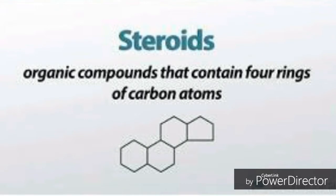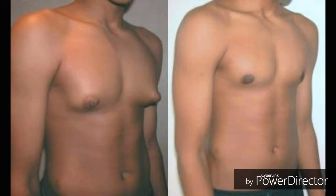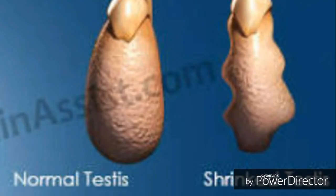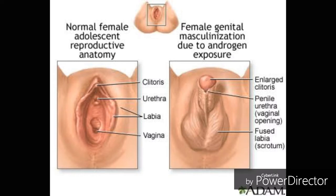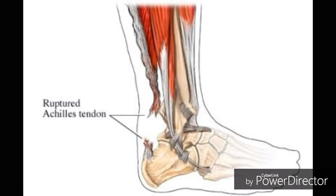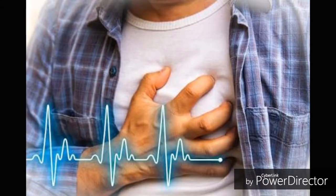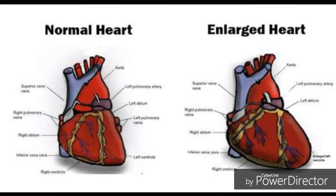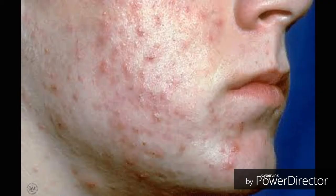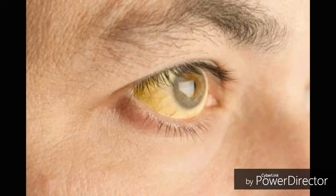Steroids: A steroid is an organic compound with four rings arranged in a specific molecular configuration. Effects of steroids on the human body include problems in the hormonal system. In men: infertility, breast development, and shrinking of the testicles. In women: enlargement of the clitoris, excessive growth of body hair, and male pattern baldness. In the musculoskeletal system: short stature if taken during adolescence, and tendon ruptures. In the cardiovascular system: increased LDL, decreased HDL, high blood pressure, heart attacks, and enlargement of the heart's left ventricle. In the liver: cancer. In the skin: severe acne and cysts, oily scalp, joint issues, and fluid retention.